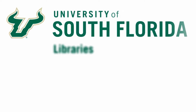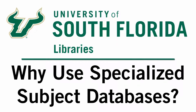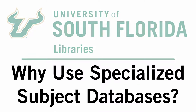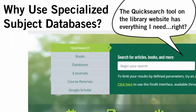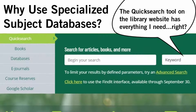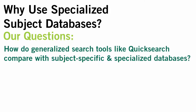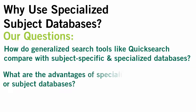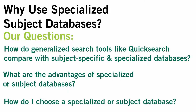When you sit down to begin your research, you might question the extra step of seeking out a specialized or subject database if you think that front page searches like QuickSearch or Google Scholar will do the job well enough. In this video, we're going to compare generalized search tools with subject-specific and specialized databases, and identify some of the advantages that specialized databases have over large, multidisciplinary search tools and look at how you can choose the right specialized database to answer your research question.